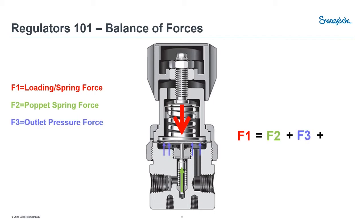Moving on, we have F3, our outlet pressure force — the force due to the pressure being exerted from your outlet pressure on the diaphragm or piston. And F4 is our inlet pressure force, being exerted on our poppet area from our inlet pressure. So we can see that the loading spring force is pretty much equal to our poppet, outlet, and inlet pressure forces combined.